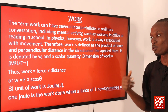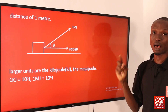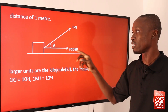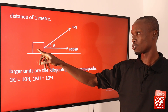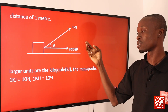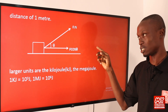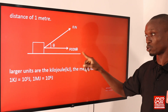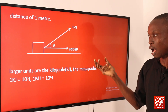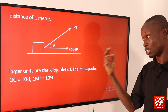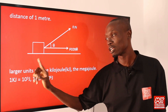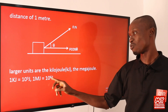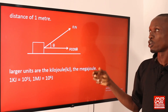To recap, one joule is the work done when a force of one newton moves a distance of one meter. When a force makes an angle with the horizontal, we use W = F × d × cos θ, resolving into the horizontal component since the object moves on a horizontal plane. Larger units of work are the kilojoule and the megajoule; one kilojoule equals 10³ joules and one megajoule equals 10⁶ joules, which is one million joules.